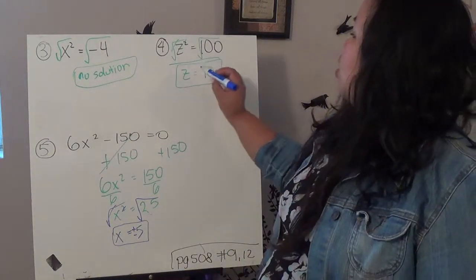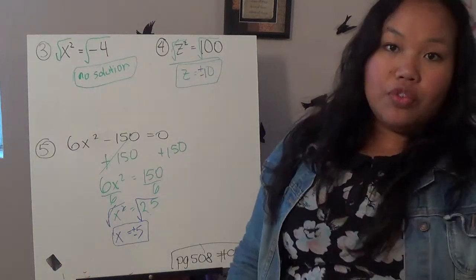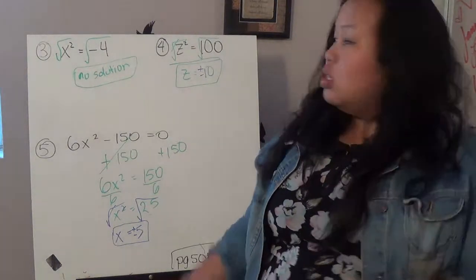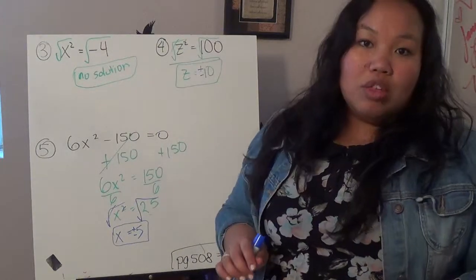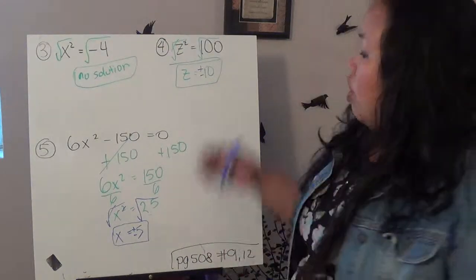Same thing here. z equals plus or minus 10. So, don't forget that you have two answers because we're dealing with a quadratic equation. So, go ahead and write this down.